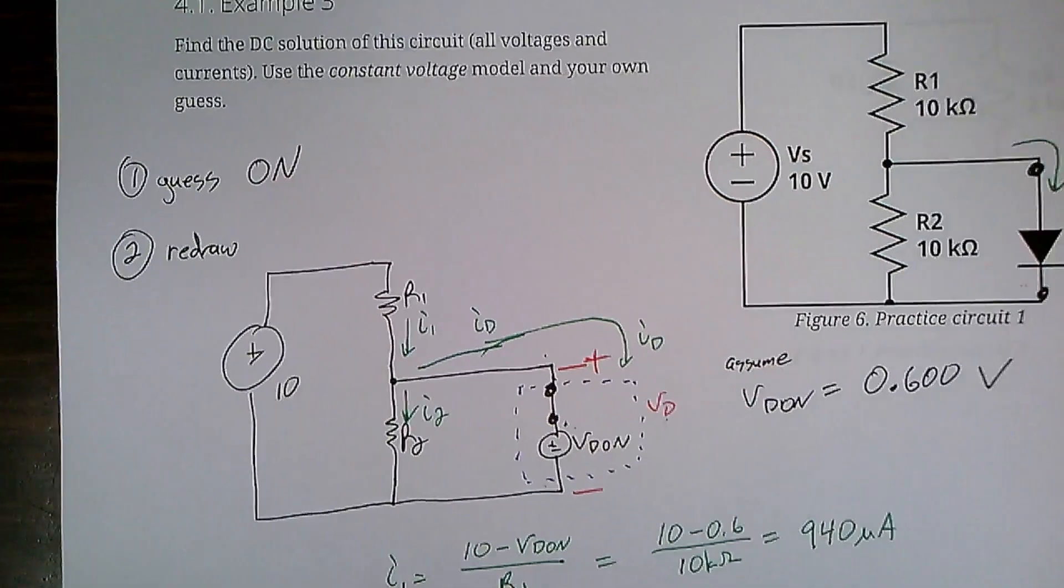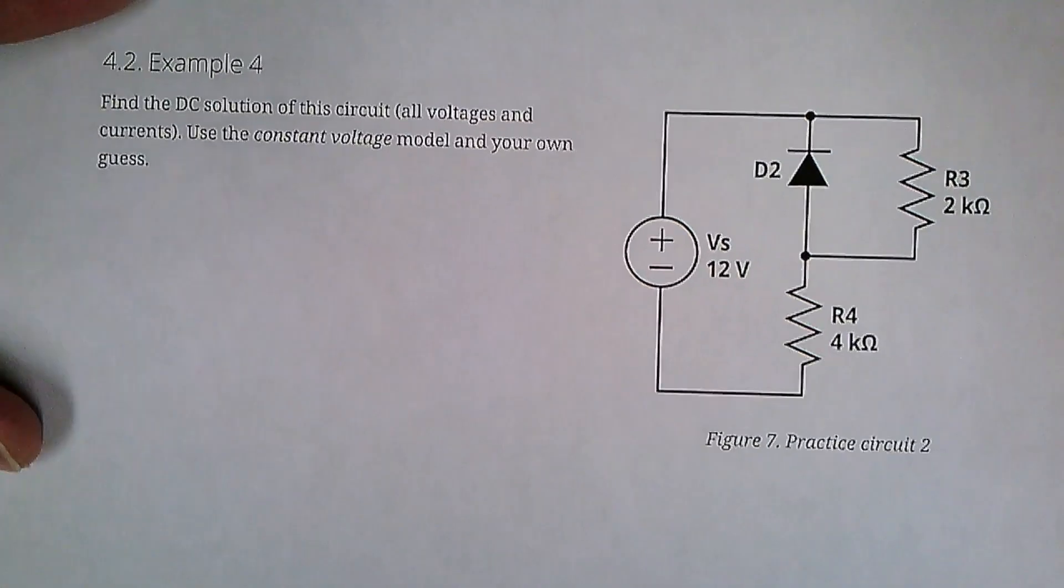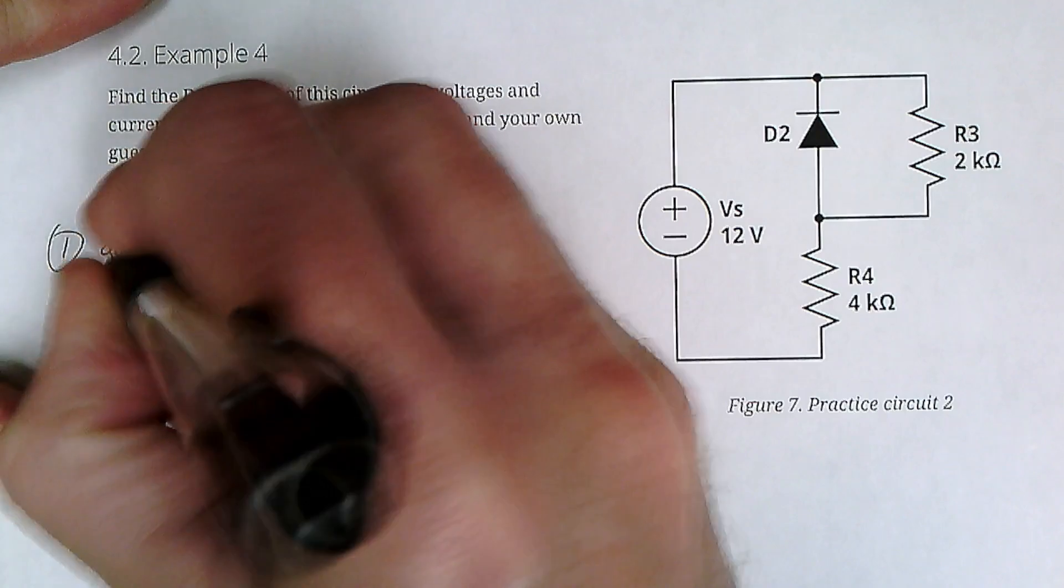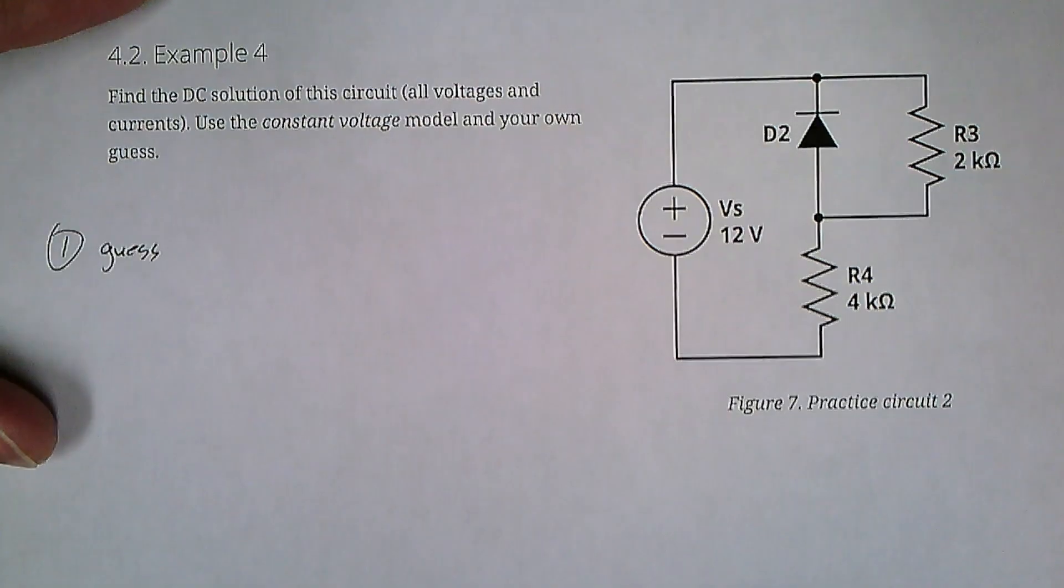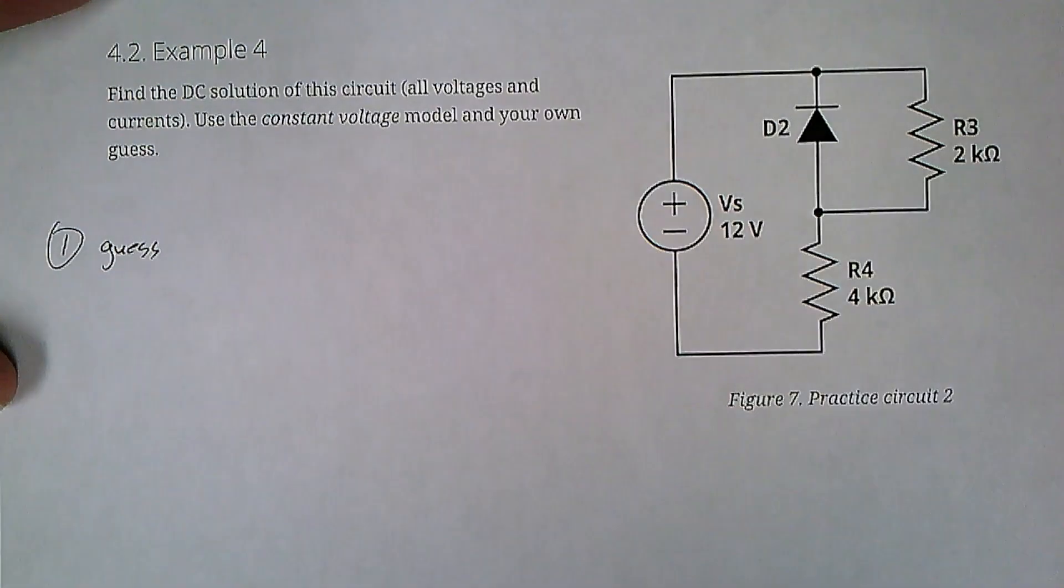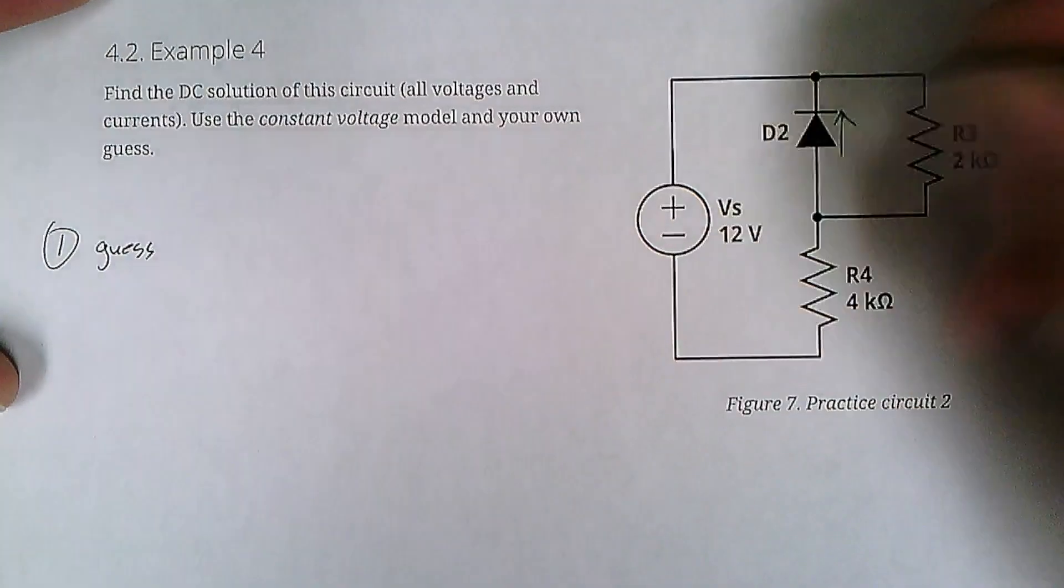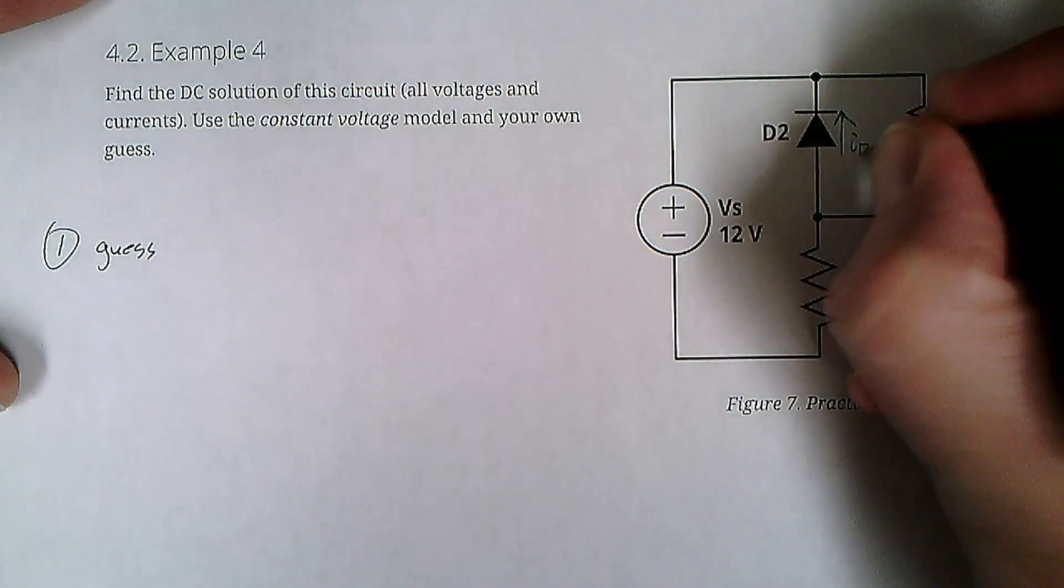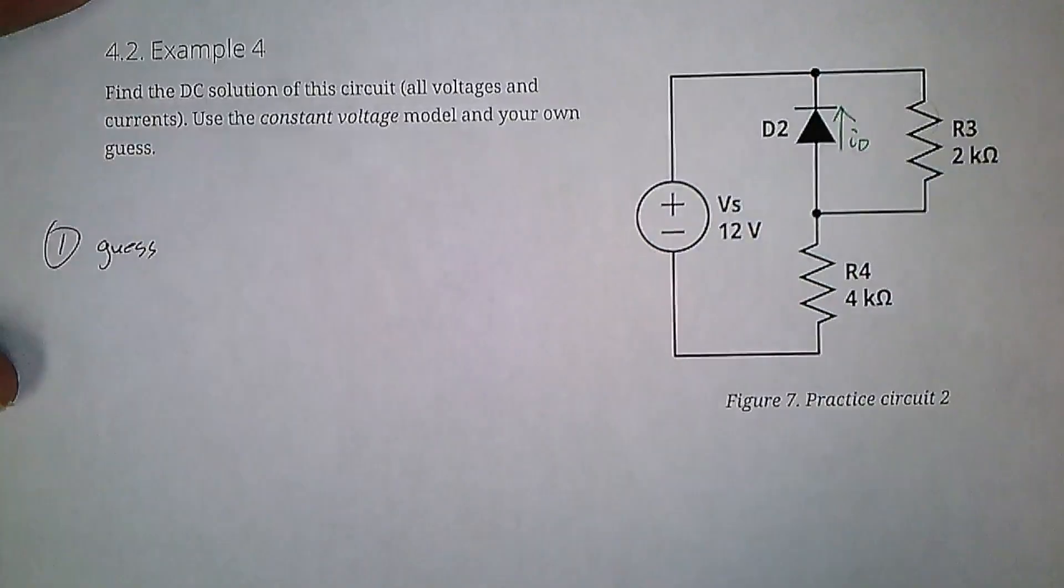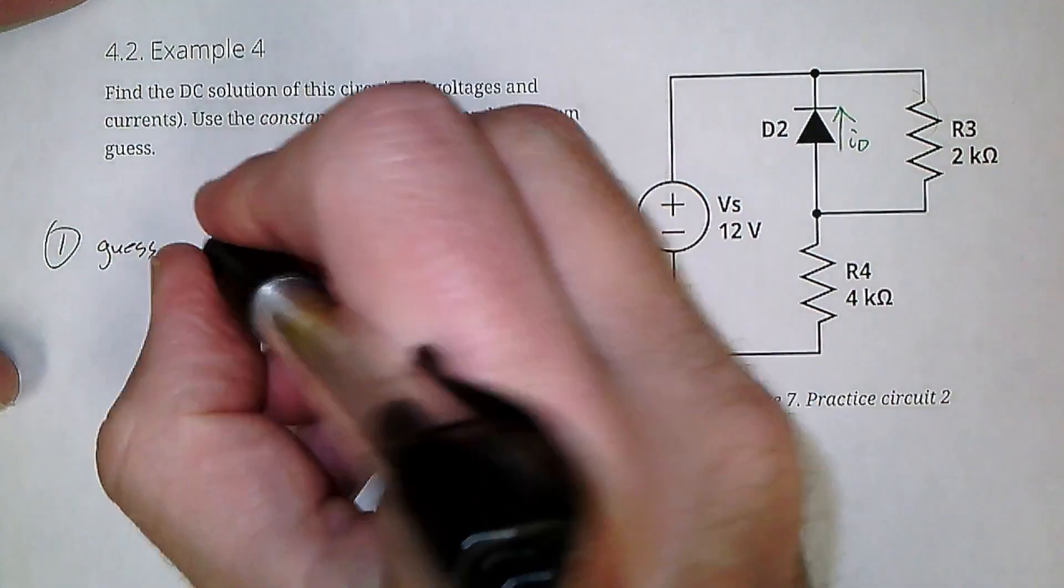Next example. Constant voltage model. What's your guess? On or off? If you don't know, just flip a coin. It doesn't matter. I'm going to guess off, because it sure looks like current is definitely not going to go that direction. So let's just do it. So guess off.